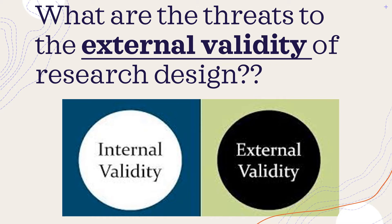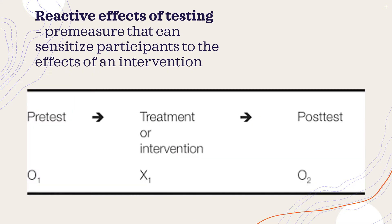What is external validity? External validity refers to the generalizability of the treatment or the condition outcomes. To simply explain, a study designed with external validity produces results that apply to the study's target population.